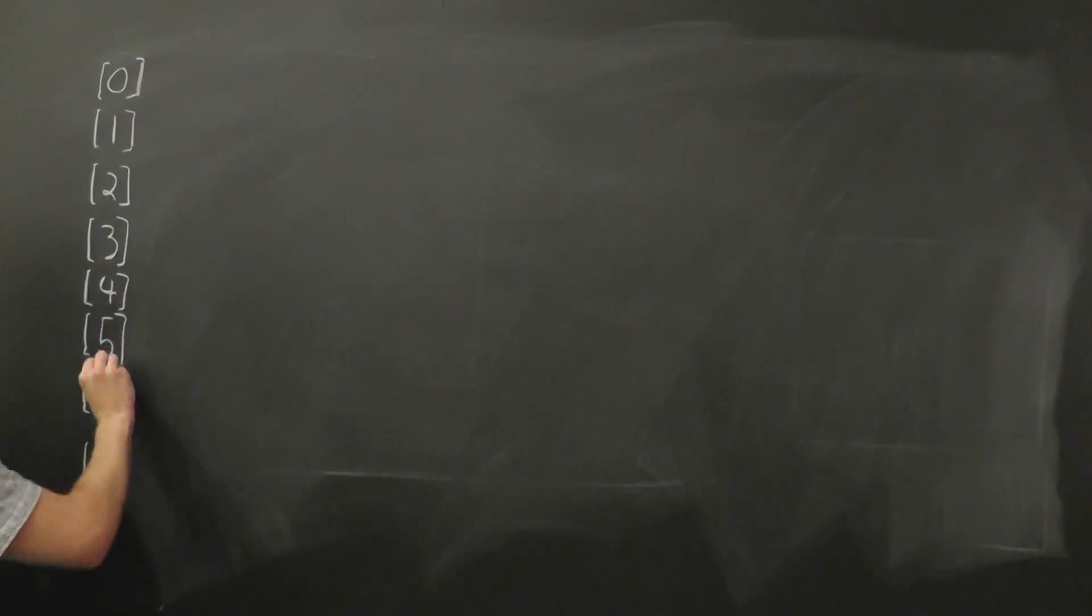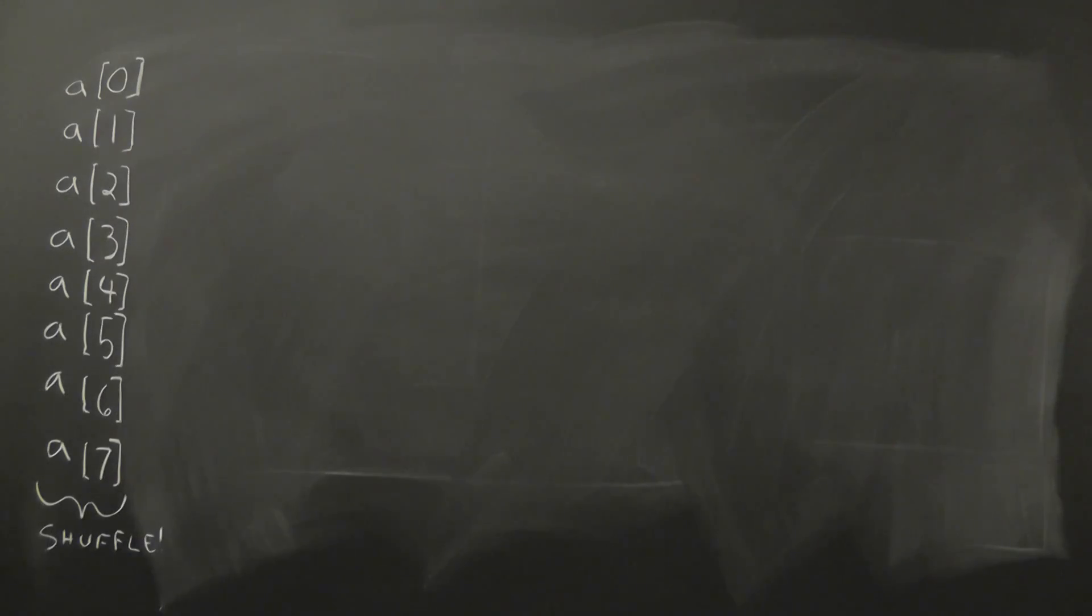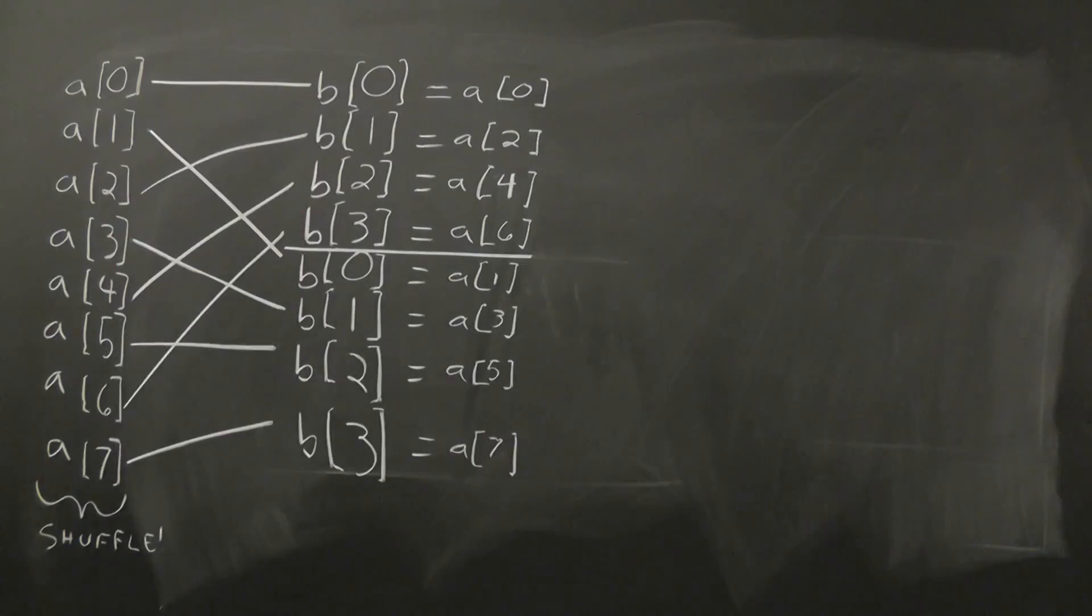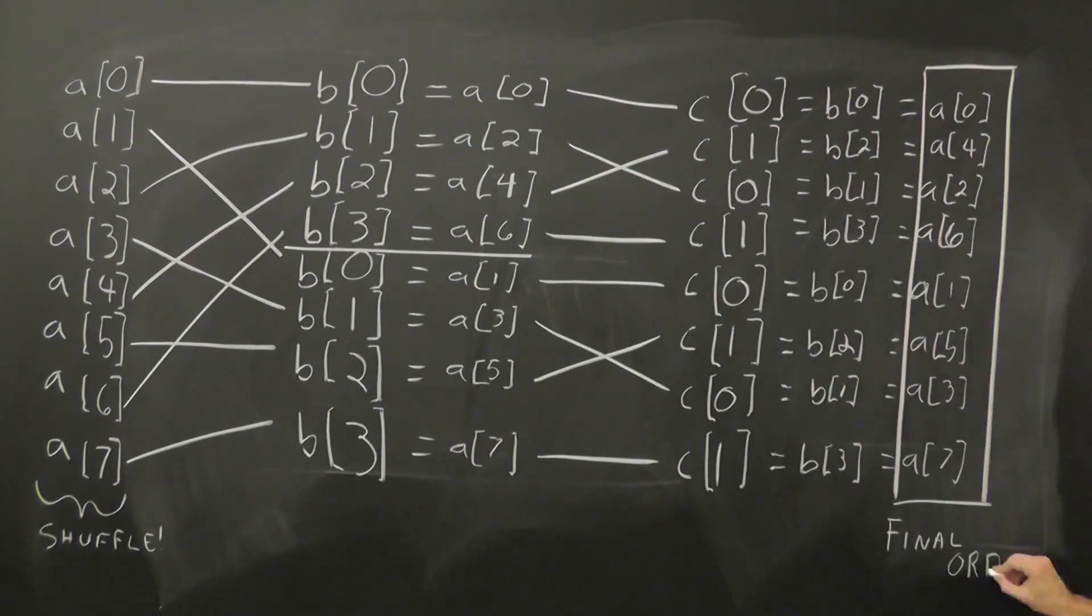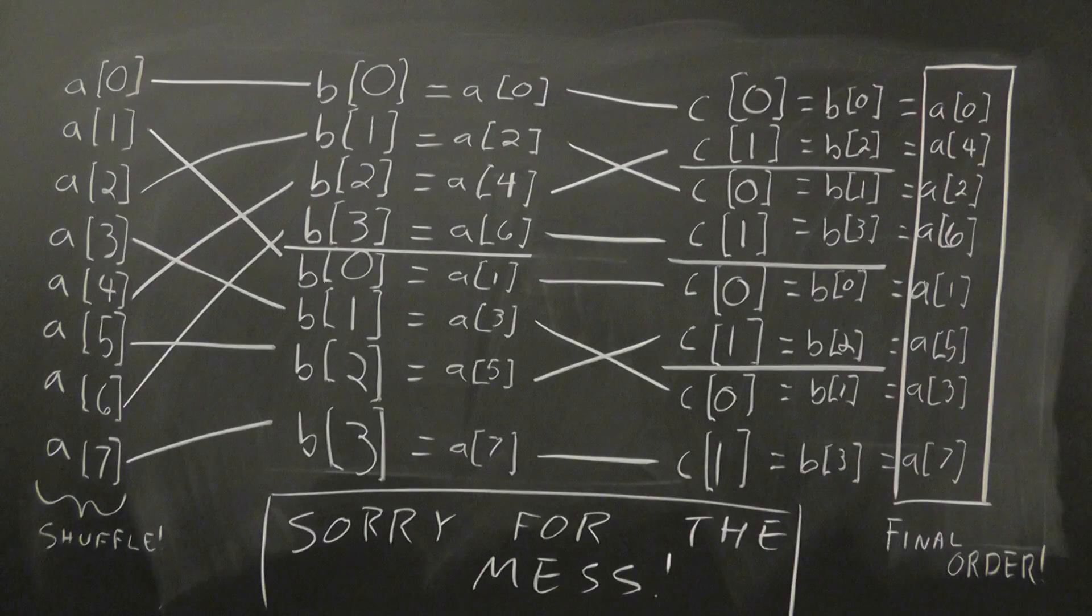So here's what we do. Imagine we have an array with eight elements in it. The first step is to strategically shuffle our elements, and this can be done in a number of different ways. One way is to simply recursively split all the even and odd elements over and over again and concatenate the array at the end.